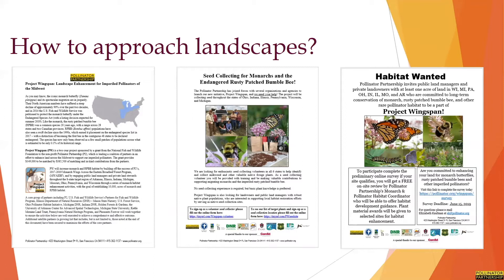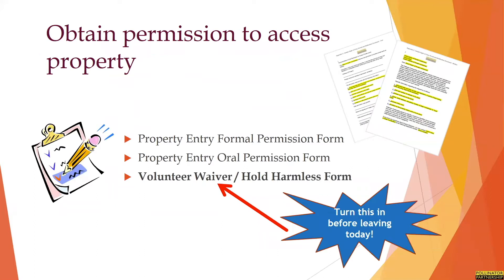State coordinators have been working with partners throughout the state to find suitable seed collection sites. But if you have a site you think might be interested in participating as a collection location, please let us know. Team leads are welcome to make these connections themselves through their network, and we will supply you with a toolkit of resources. We have several documents to help explain what Project Wingspan is, and links set up for people or organizations to sign up as seed collection sites or volunteer seed collectors. If you'd prefer, you can also pass this information along to your state coordinator, and they can reach out to the site to see if they're interested in participating.